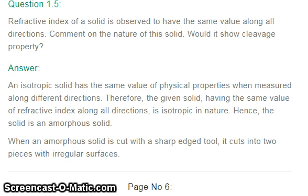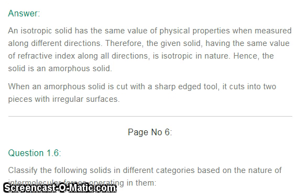Next question: the refractive index of a solid is observed to have the same value along all directions. Comment on the nature of this solid — would it show cleavage property? An isotropic solid has the same value of physical properties when measured along different directions. Therefore, the given solid is isotropic in nature, hence it is an amorphous solid. When an amorphous solid is cut with a sharp-edged tool, it cuts into two pieces with irregular surfaces.